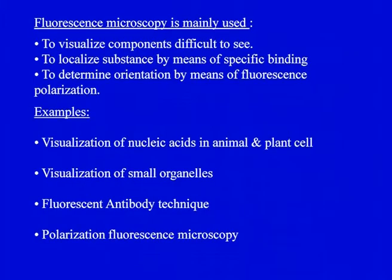Fluorescence microscopy is mainly used: to visualize components which are difficult to see; to localize substances by means of specific binding; and to determine orientation by means of fluorescence polarization. Many components present in very low quantities can be visualized by fluorescence microscopy. If you tag a particular macromolecule with a fluorescent compound, it can be located and followed by observing its fluorescence as a function of time.